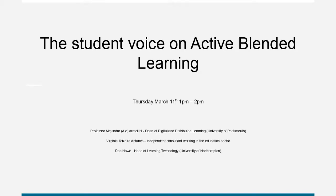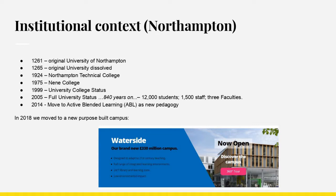First, a little institutional context around the University of Northampton. Back in 1261 there was an original University of Northampton; four years later that was dissolved. We became a technical college, then NEN College, we got university college status, then full university status in 2005. We have around 12,000 students and 1,500 staff across three faculties. In 2014 we moved to Active Blended Learning as a new pedagogy.